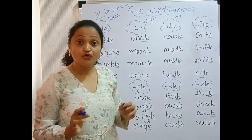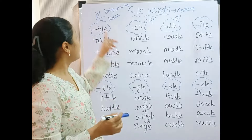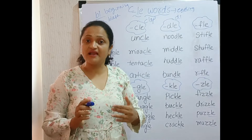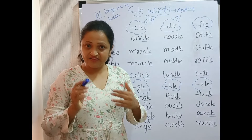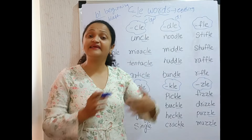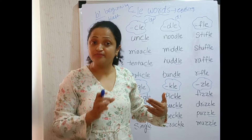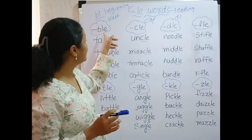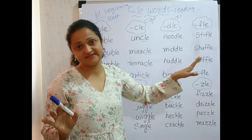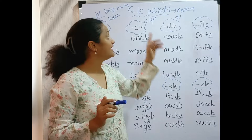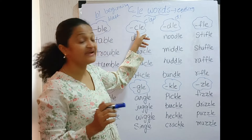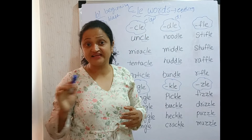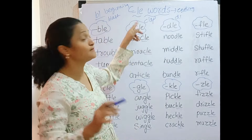So, don't get confused. If FL, BL, CL — these are called blends. If they are in the beginning or middle of the word, we read it as CLO, BLO, GLO, like that. And if in the end of the word — BLE, CLE, FLE — then the sound is L.